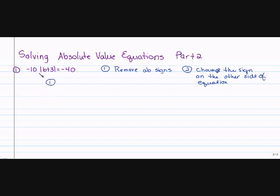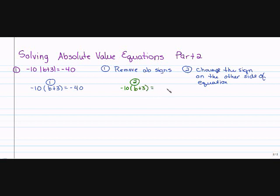In my first problem, I'm going to rewrite it with negative 10. There's no sign between the 10 and the absolute value, so I'm going to use parentheses indicating multiplication. For the first equation, all I'm doing is removing the absolute value signs. For the second problem, I'm not only going to remove the absolute value signs, but I'm going to change the sign on the other side of the equation, which is the negative 40. So I'll remove the absolute value signs, replace them with parentheses, and make the negative 40 a positive 40.